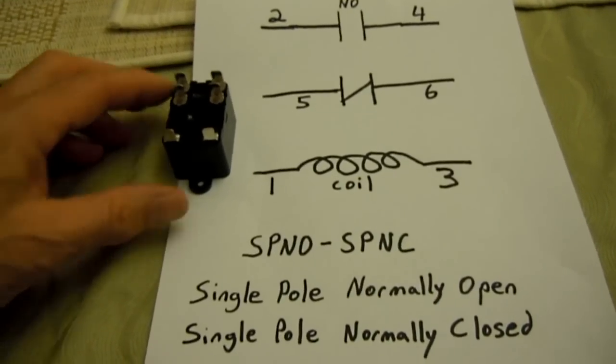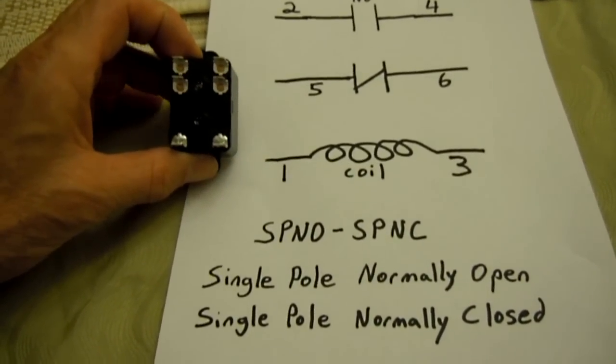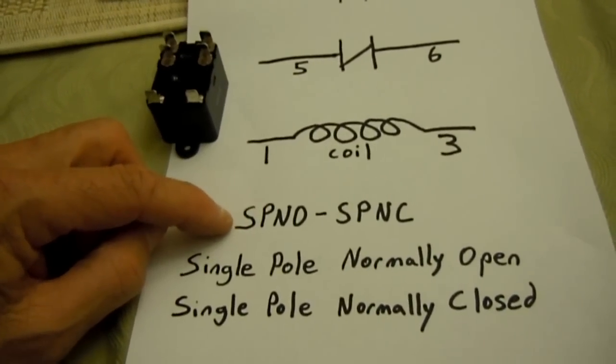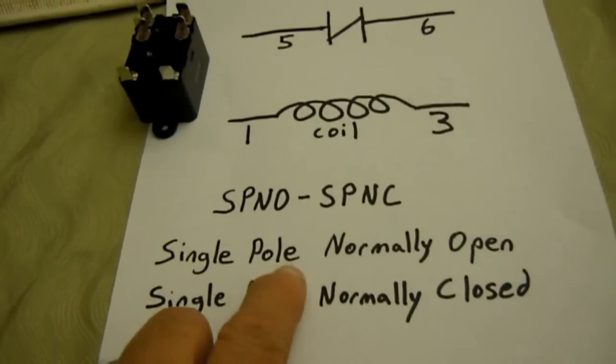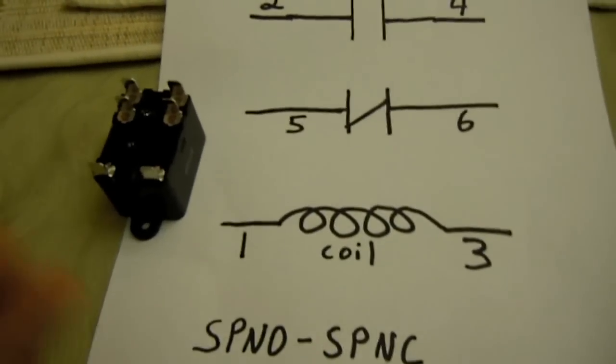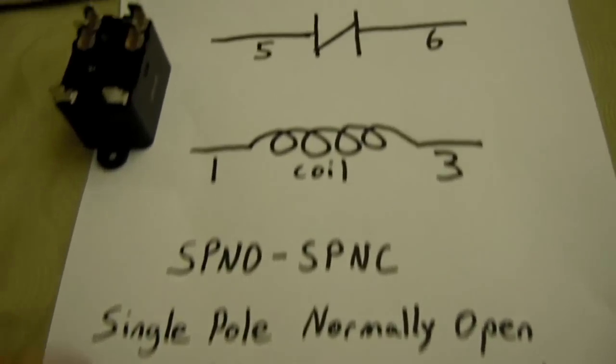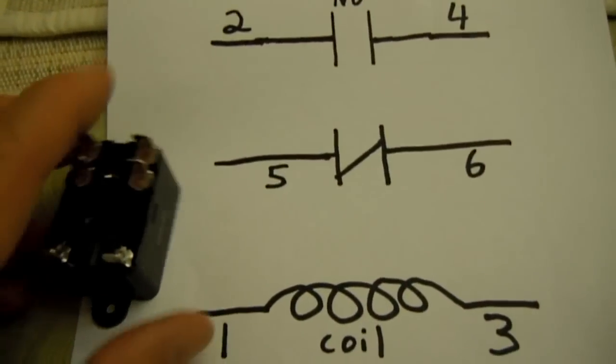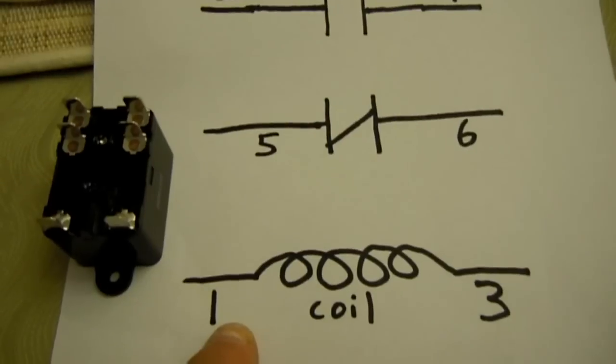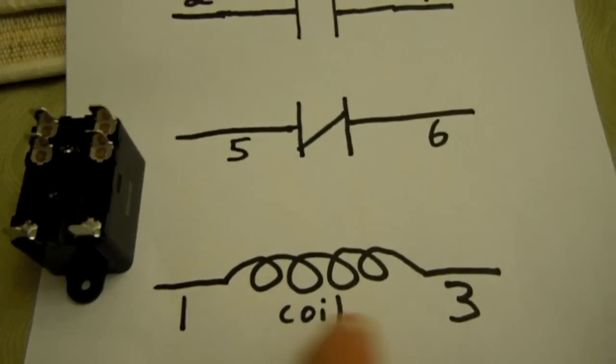And now for the six pin relay, which is the SPNO and SPNC, single pole normally open and single pole normally closed. And I'm going to explain how this is figured. Just as the other two relays I showed you, you would connect your coil voltage to positions one and three.